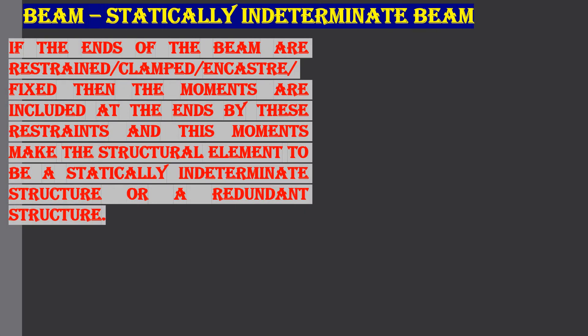Now if the ends of the beam are restrained, clamped, encastre, or fixed, there will be no simple supports — it will be fixed at one end or at both ends. In such a case, there will be restraining moments which make the structural element a statically indeterminate structure or a redundant structure.